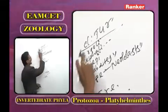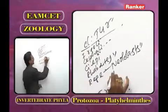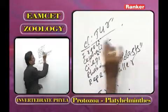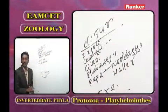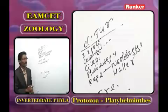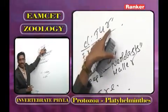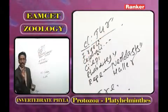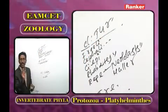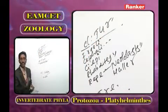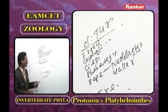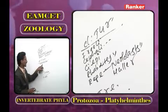In class Turbellaria, the larva is called Muller's larva. Animals included are planarians and acilla.